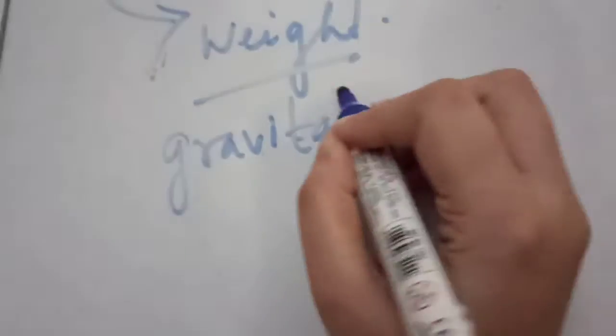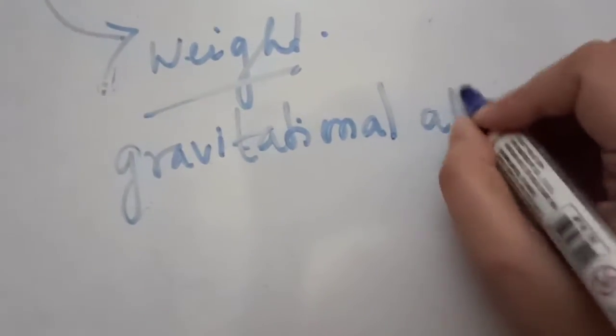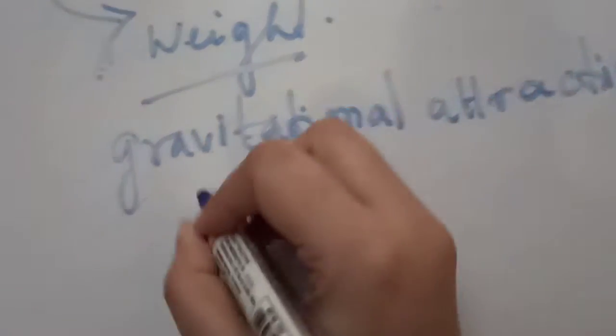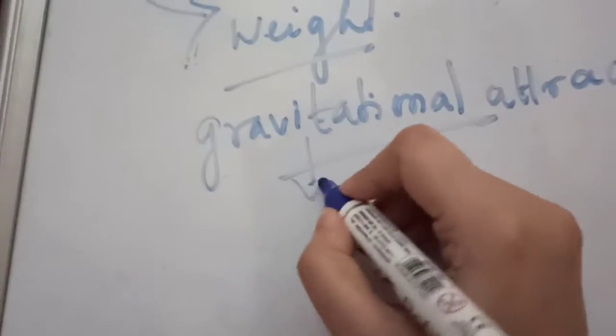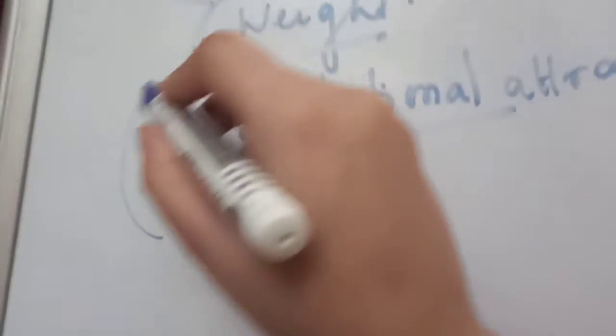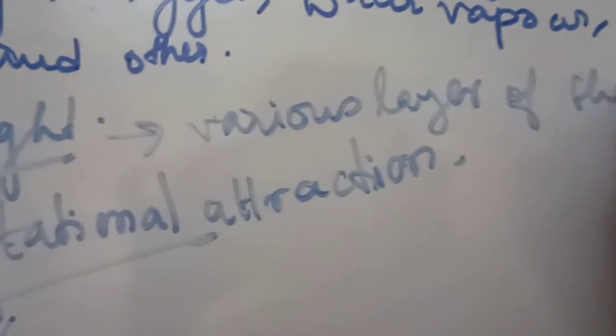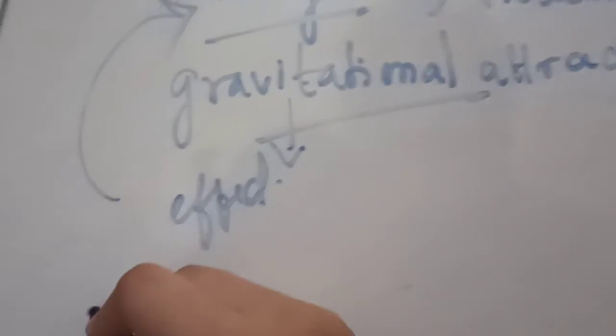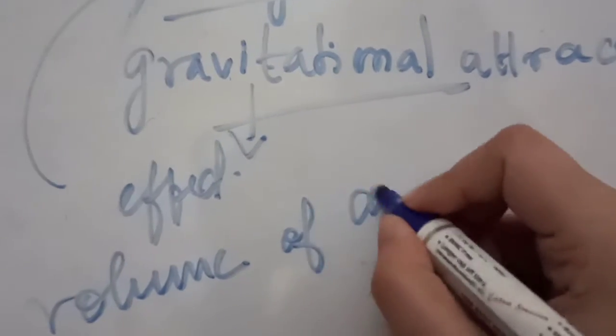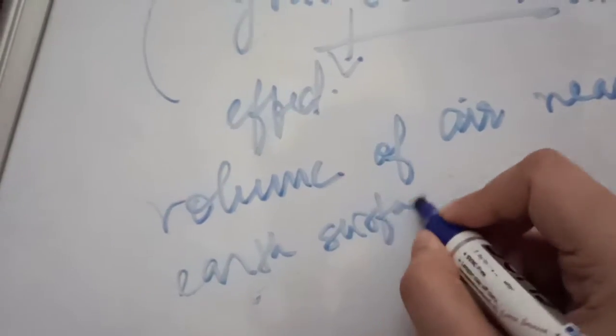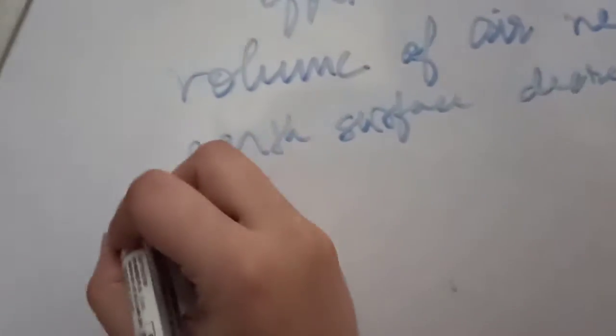We all know that gravitational attraction is present on everything on the earth's surface. Due to this gravitational effect and the cumulative weight of the various layers of the atmosphere, the volume of air near the earth's surface decreases and density of air molecules increases.